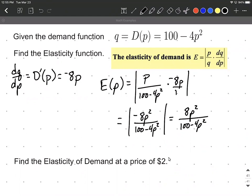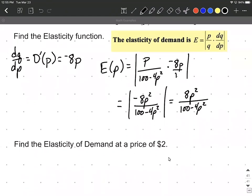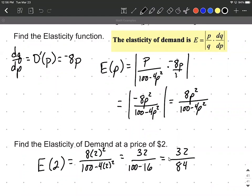Next, let's evaluate this at a price of $2. So our elasticity of demand evaluated at $2, we're going to say 8 times 2 squared over 100 minus 4 times 2 squared, just replacing each of those p's in our function with 2's. So that's 8 times 4 is 32, and 100 minus 4 times 4 is 100 minus 16, which works out to be exactly 32 over 84.